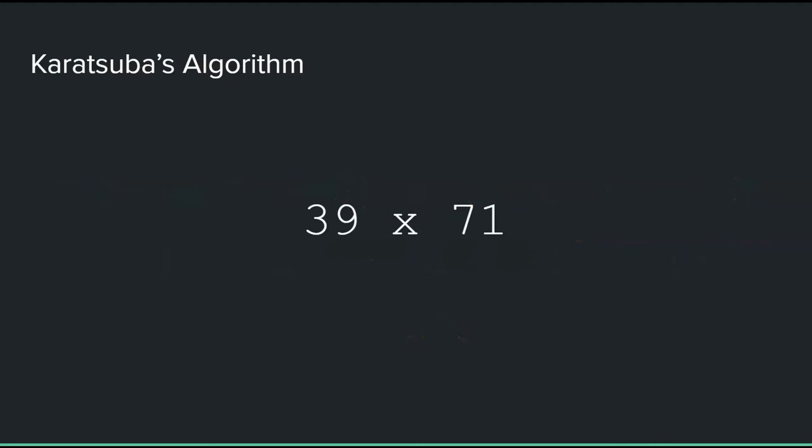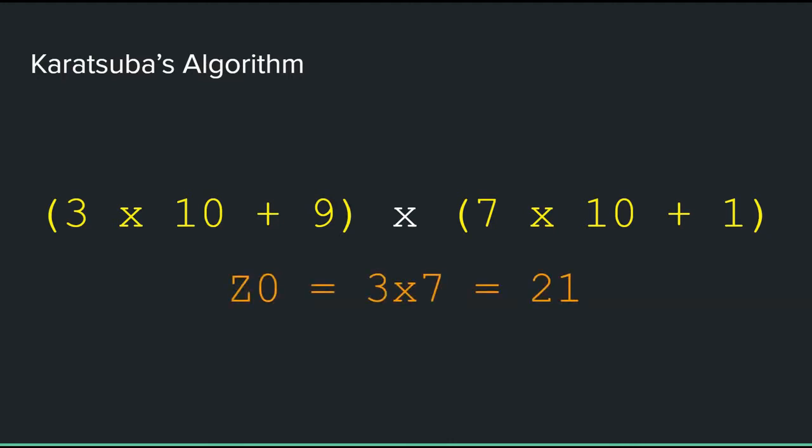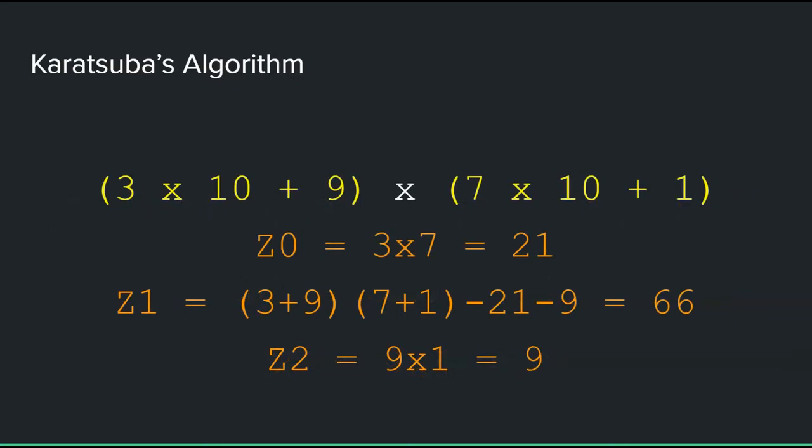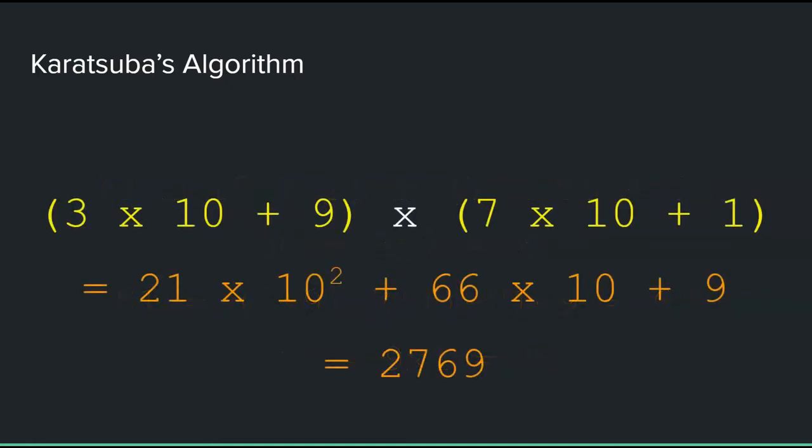Let's try it with another example, but faster this time. 39 times 71. So, we split 39 and 71. 3 times 10 plus 9 times 7 times 10 plus 1. Z0 is 3 times 7, which is 21. Z2 is 9 times 1, which is 9. And Z1 is 3 plus 9 times 7 plus 1 minus 1 minus 9, which is 66. Then you take Z0 and multiply it by the square of the base. Add it to Z1 and multiply it by the base. Then add Z2. So, that's 21 times 10 squared plus 66 times 10 plus 9. That gives you 2,769.